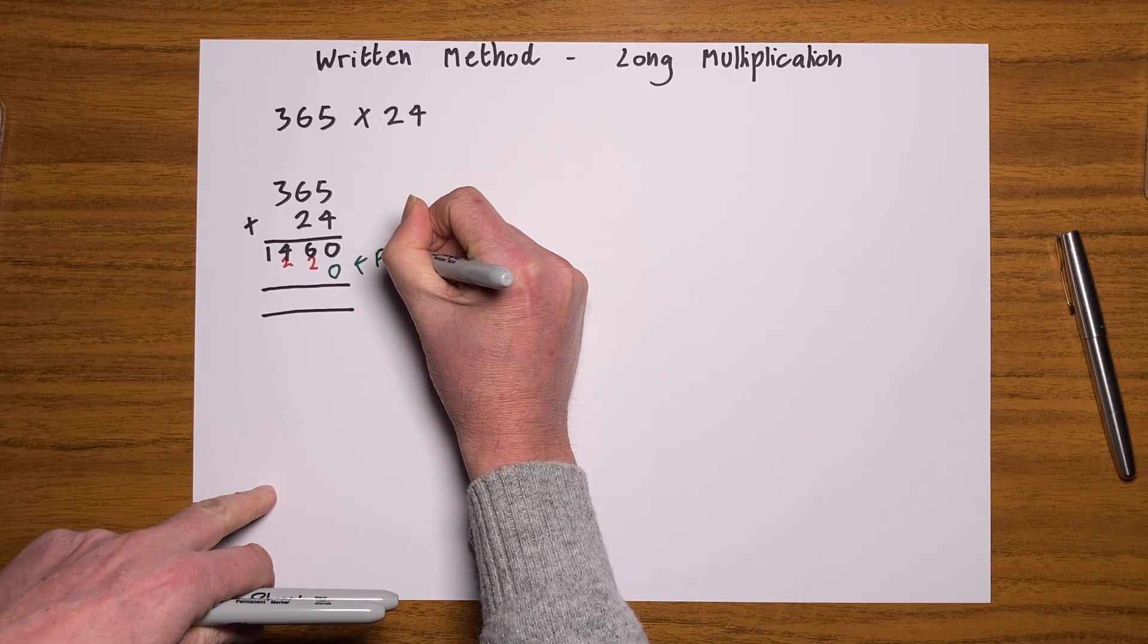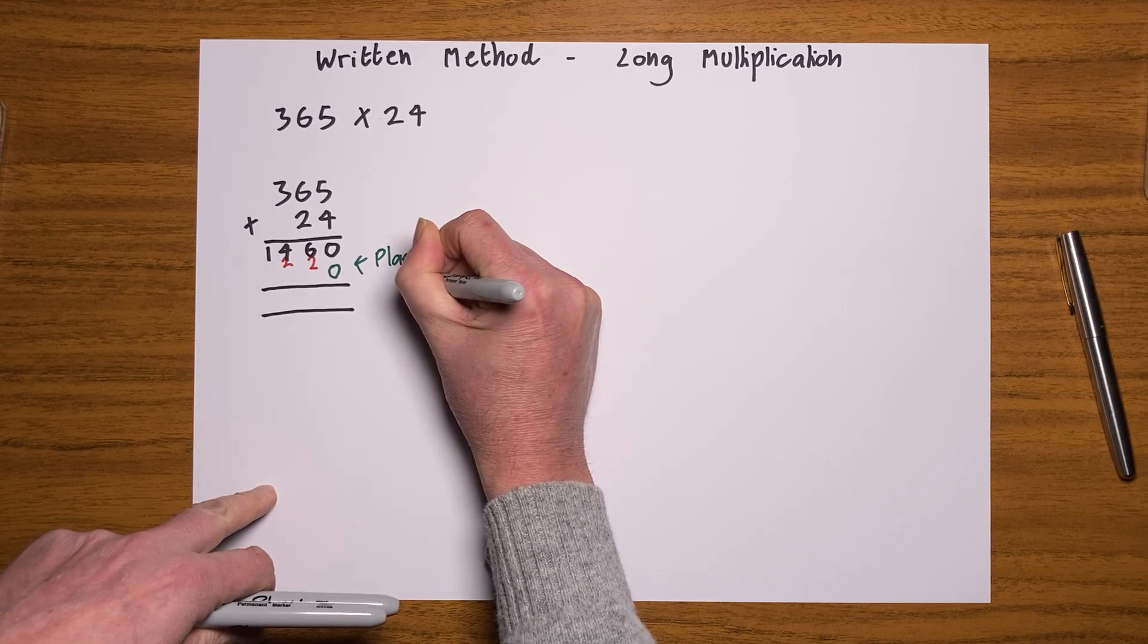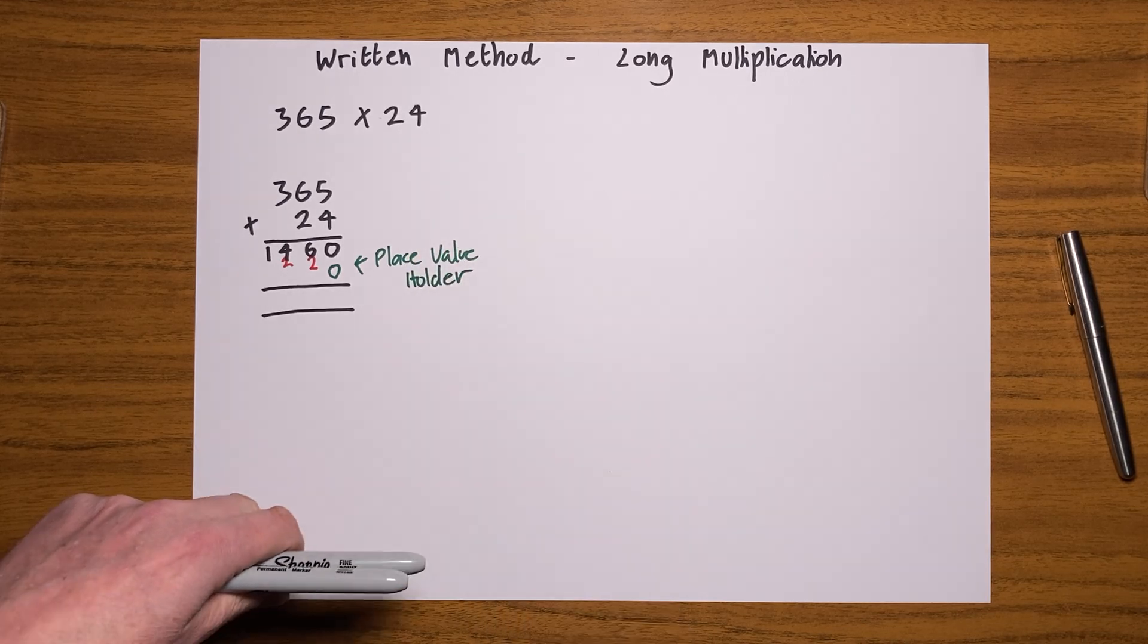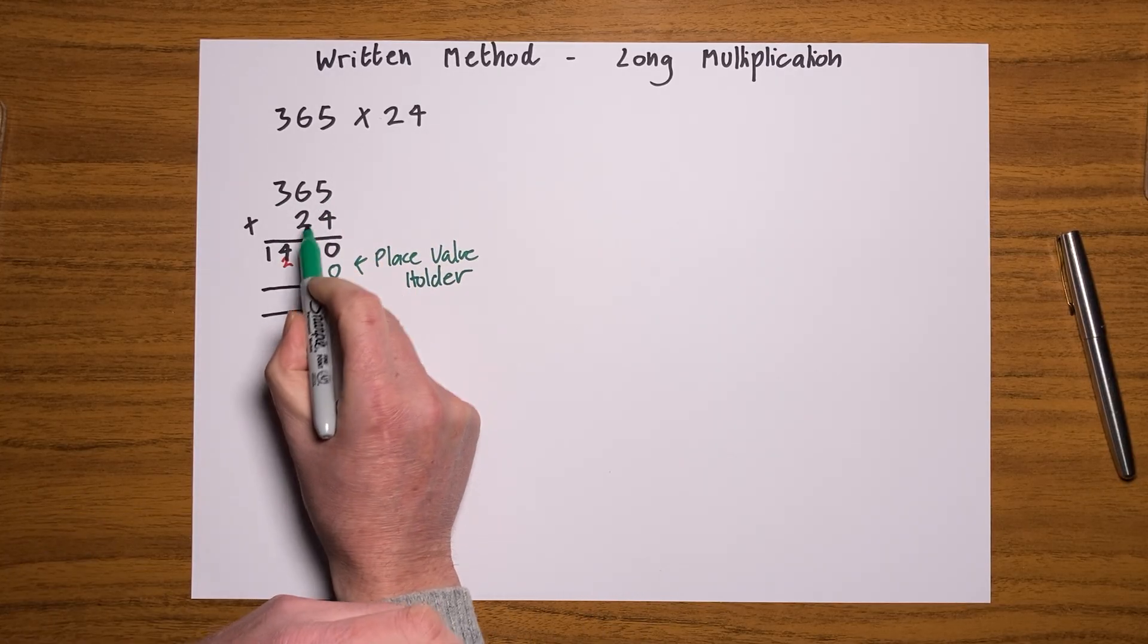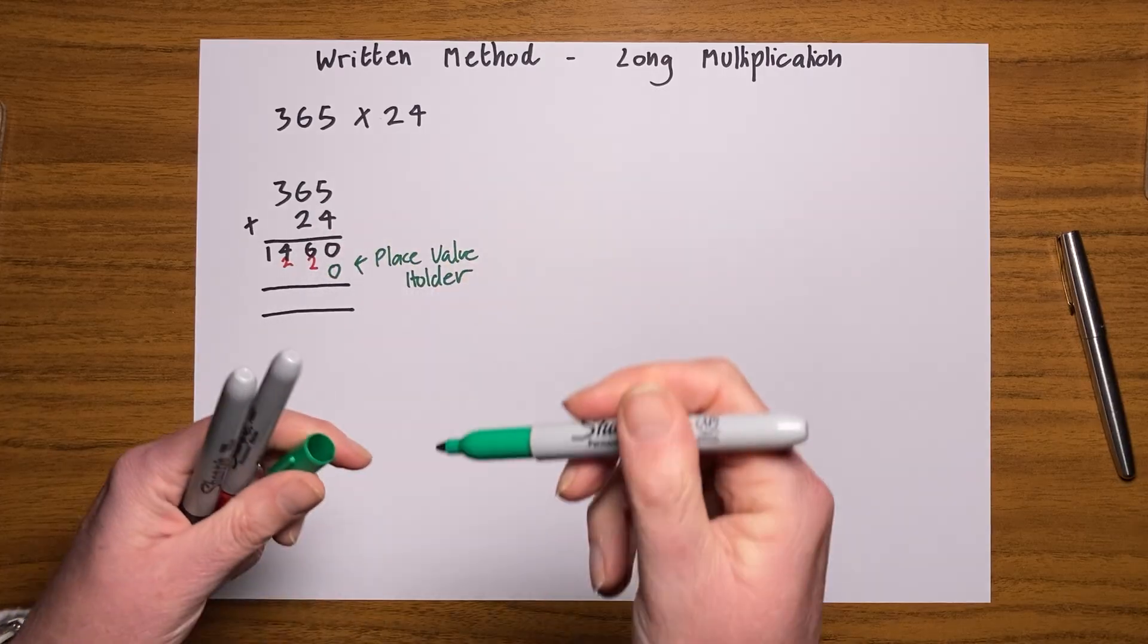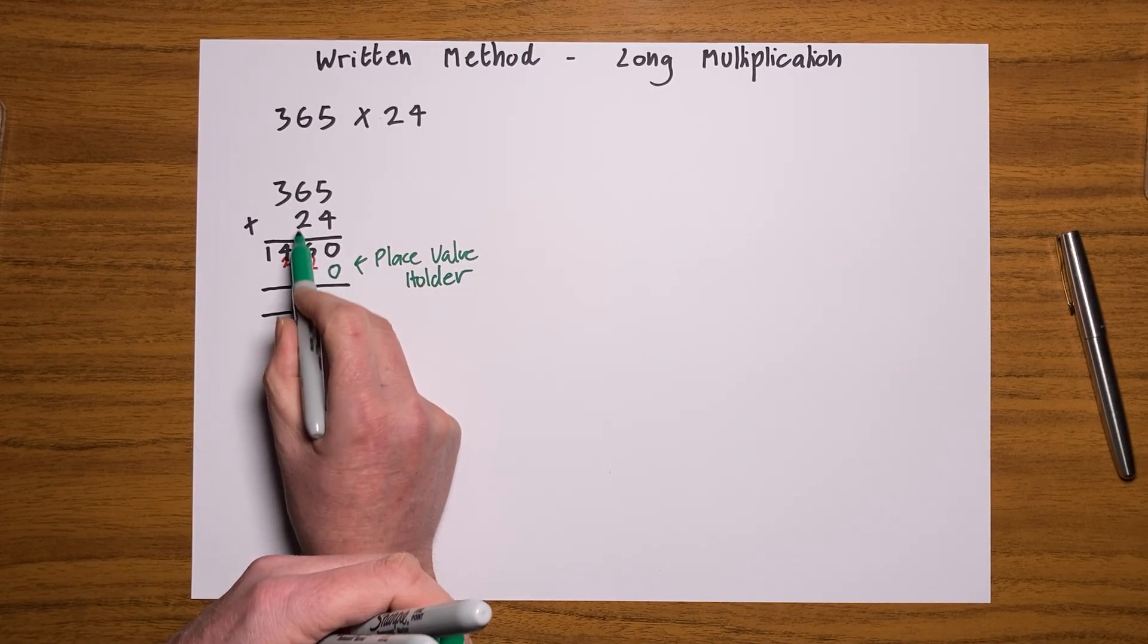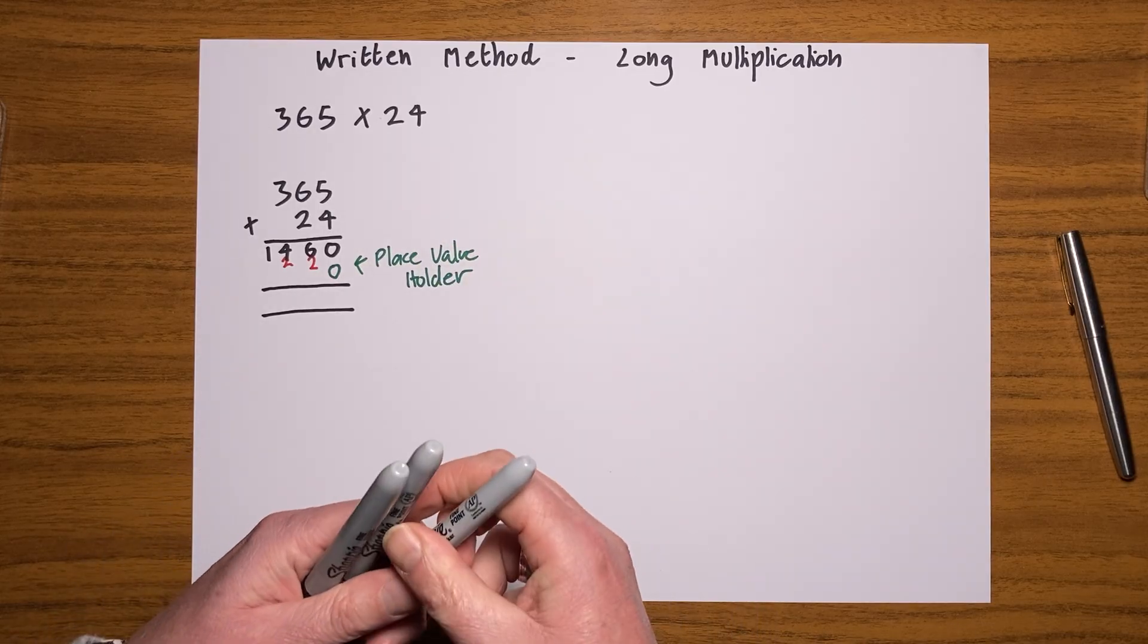I'm going to use a green here because this is the important bit. Before I go any further, I need to put a zero in here, and that is important. That is the zero, and I'm going to call that, it's got a name, it's the place value holder. Because that's going to make sure that every time I multiply this line by two, having that zero there automatically means I'm going to be multiplying it by 20.